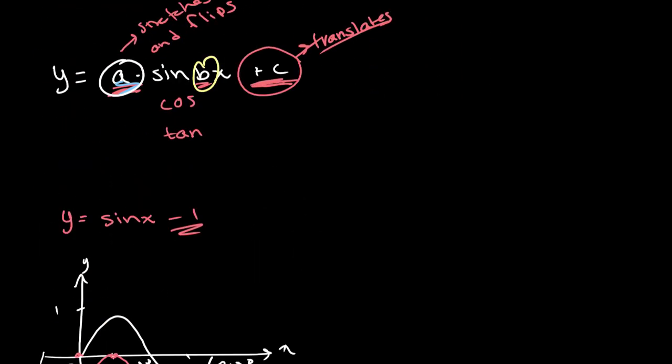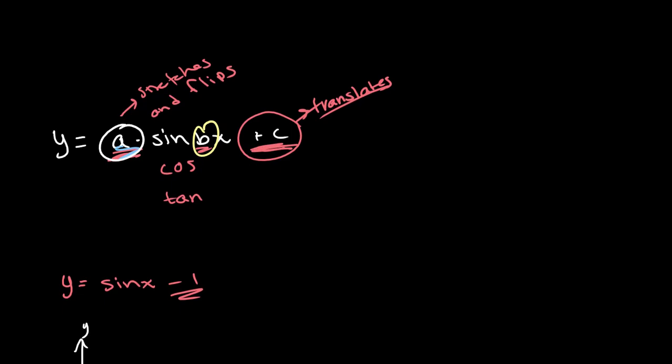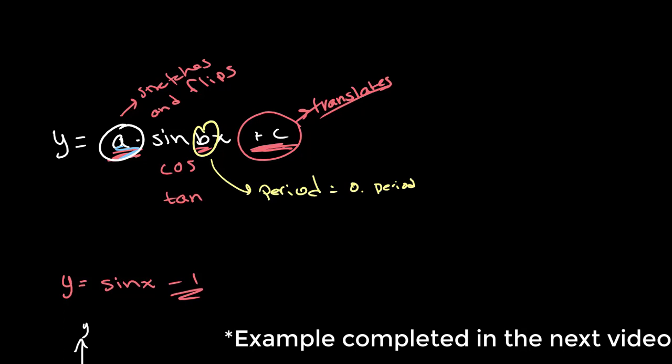So our period changed from 180 degrees to 90 degrees. Okay, so in our equation where we have y equals a times sine bx plus c, what b does is it changes the period of our graph. Period equals old period over b.